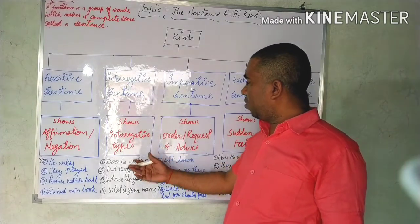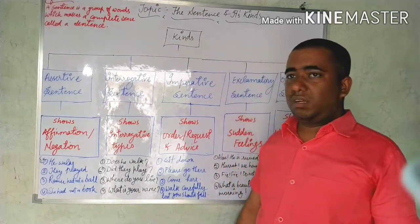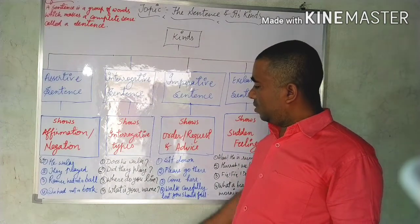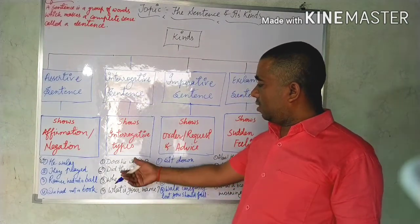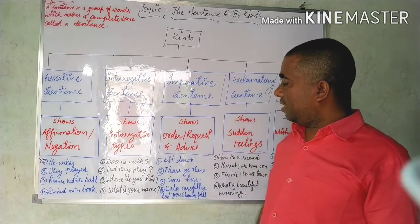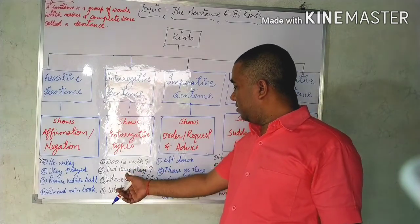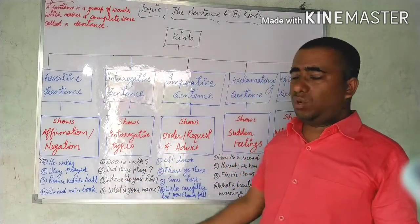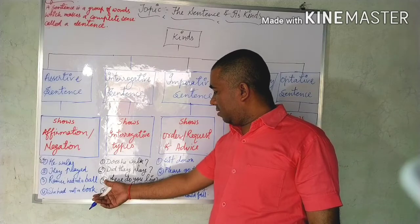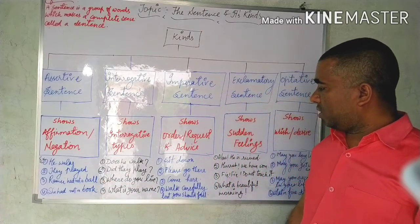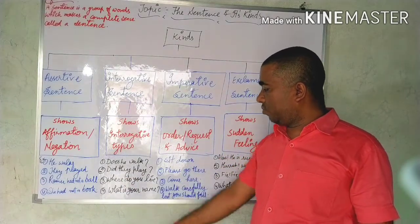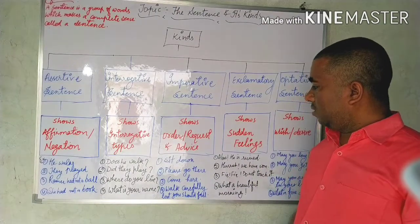The second kind is interrogative sentences. In interrogative sentences, it shows interrogation. The first example is 'Does he walk?' — it starts with a helping verb, so it belongs to the helping verb type. The second is 'Did they play?' — 'did' is also a helping verb. The third and fourth examples are question word types because the sentences start with 'where' and 'from what' respectively.